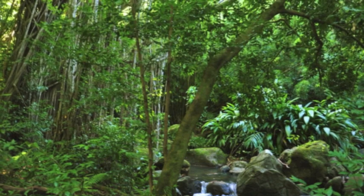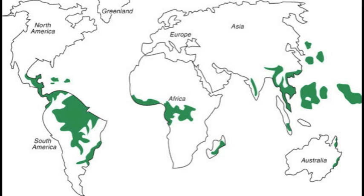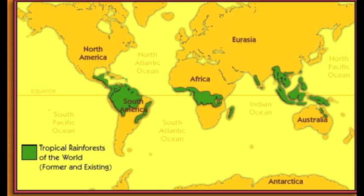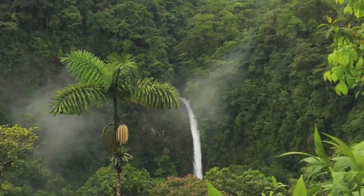Rainforests are dense forests made up of many tall trees. They can be found in Central America, Africa, Indo-Malaysia, India, Southeast Asia, New Guinea, and Australia. Almost all of the rainforests lie near the equator.